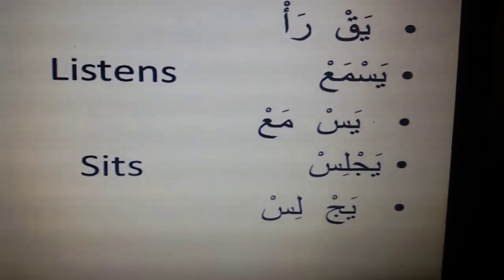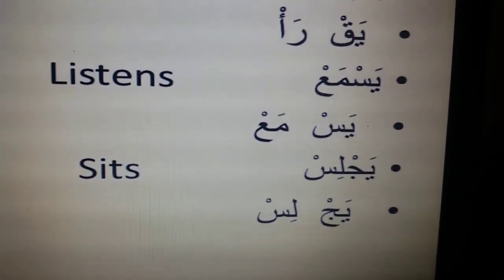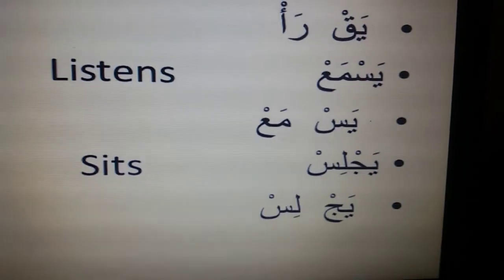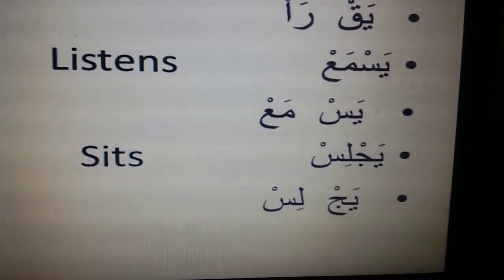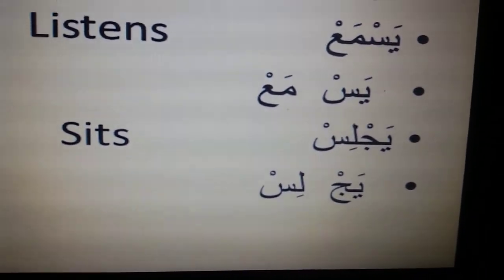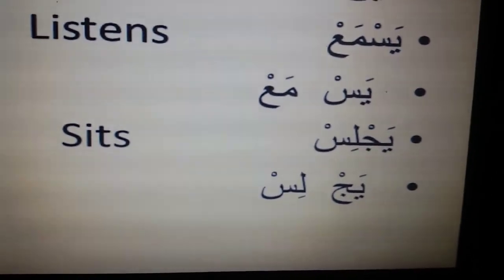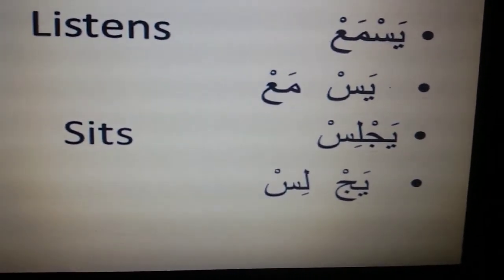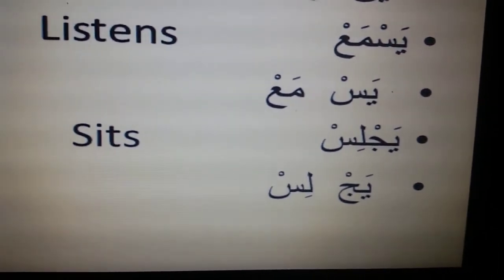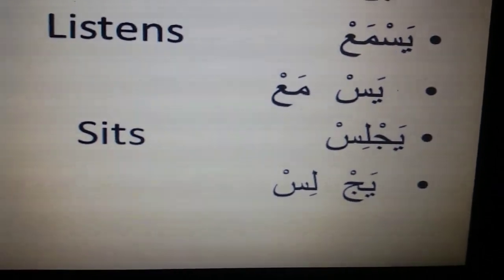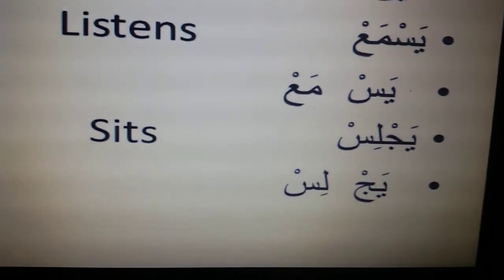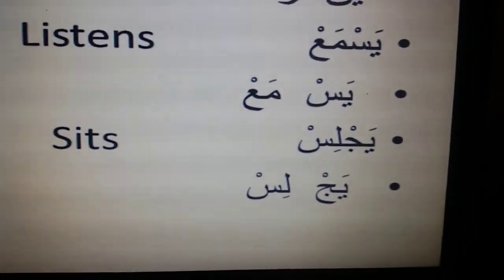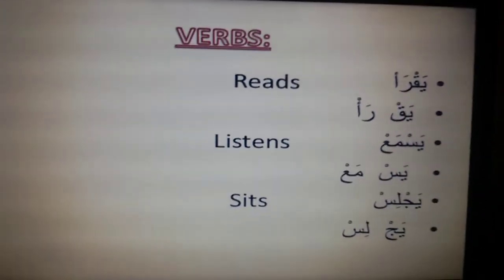The last verb is yajlis, meaning 'he sits'. It consists of four letters: ya, jeem, lam, and seen. We pronounce the first two letters together — ya with jeem gives 'yaj'. The second part: lam with a kasra gives 'li', and seen with a Sukun gives the final 's', so it becomes yajlis.